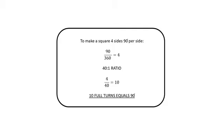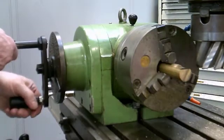Here we can see that laid out on paper. 90 into 360 gives us 4, the four sides of the square. 40 to 1 ratio. So the four sides into 40 gives us 10 full turns of the handle to equal our desired 90 degrees. Always worth just sketching out on paper just to do a sanity check.